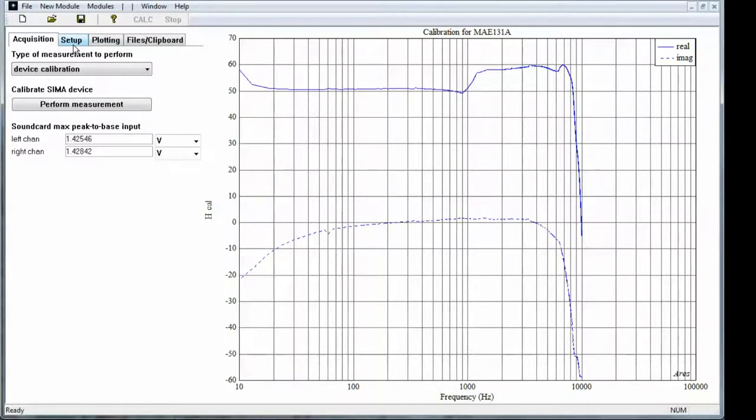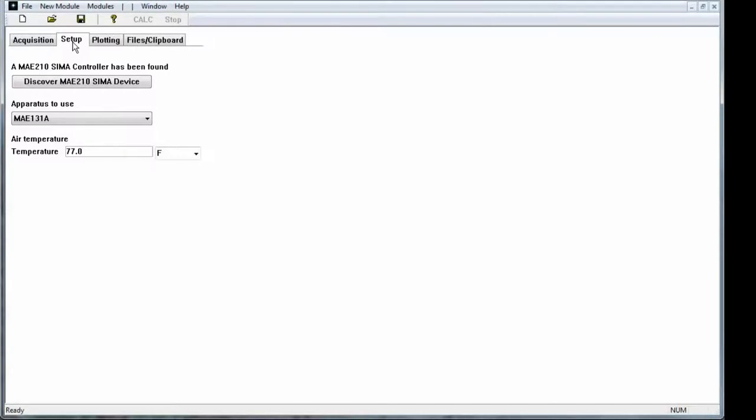When you run it, the first thing you're going to want to do is select the setup tab and make sure you've got the correct device selected. In this case, we're using the 131. You're also going to want to make sure that the controller has been found. And finally, enter an appropriate temperature for the air that you're working in, the room temperature.